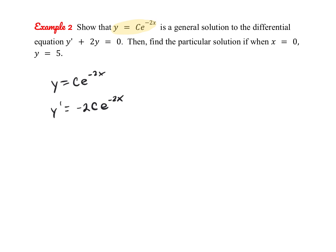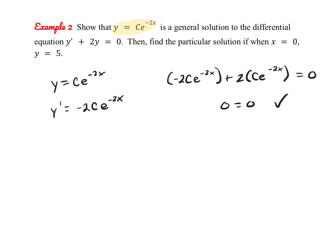Now we substitute into the differential equation: negative 2c·e to the negative 2x plus 2 times c·e to the negative 2x. The negative 2 and positive 2 cancel, giving 0 equals 0 — a true statement, confirming it's a solution. For the particular solution with x equals 0 and y equals 5: 5 equals c·e to the 0, so c equals 5. The particular solution is y equals 5e to the negative 2x.